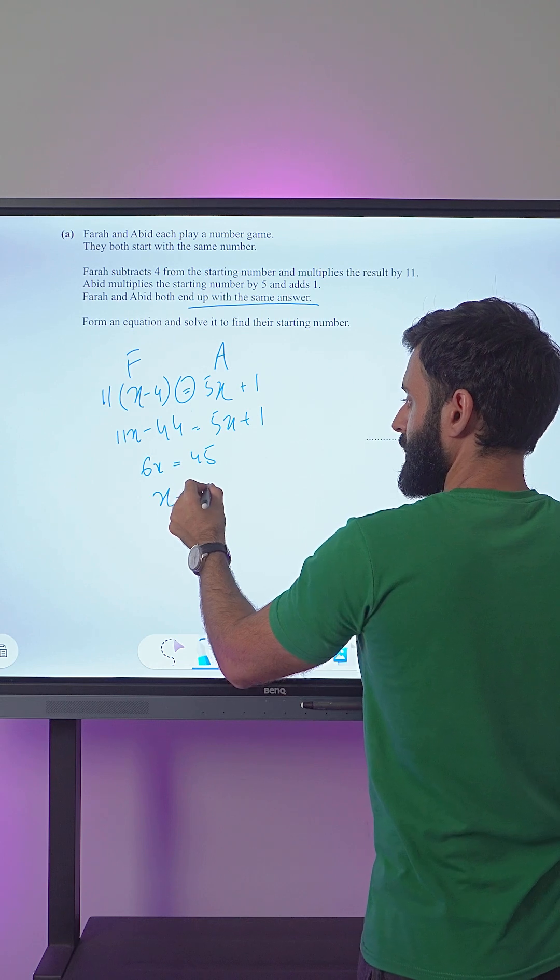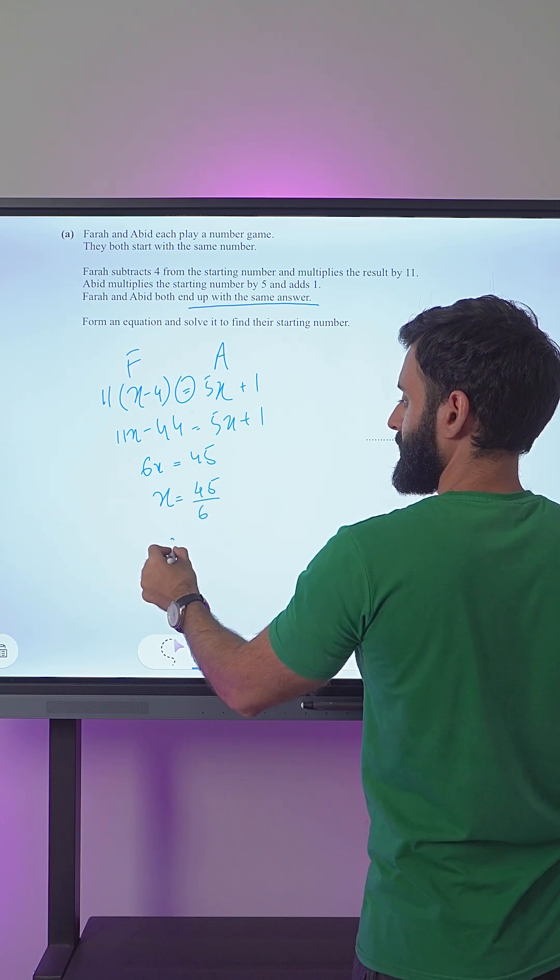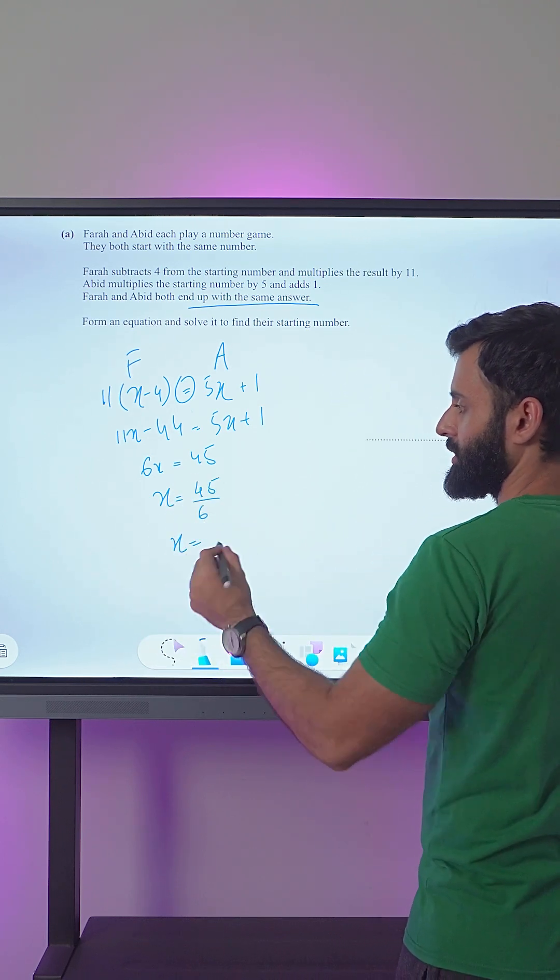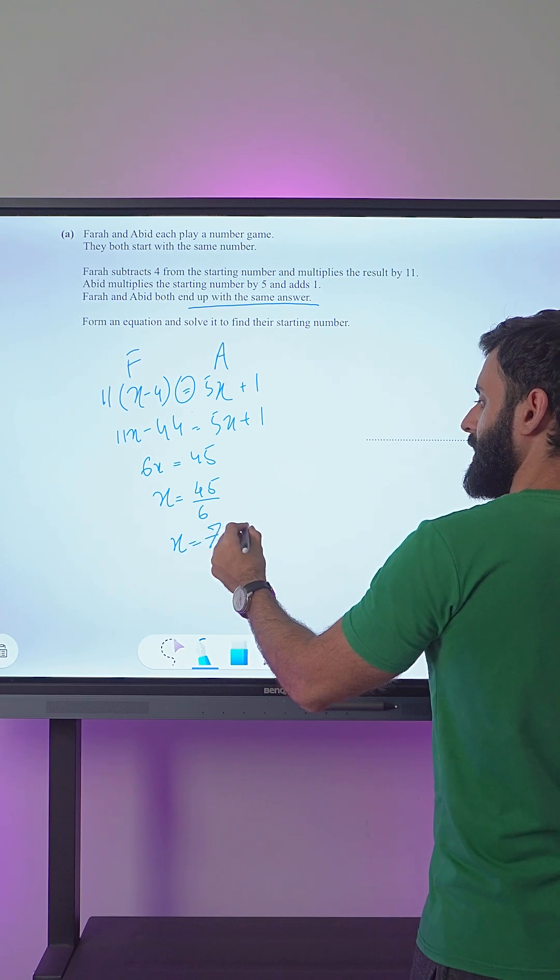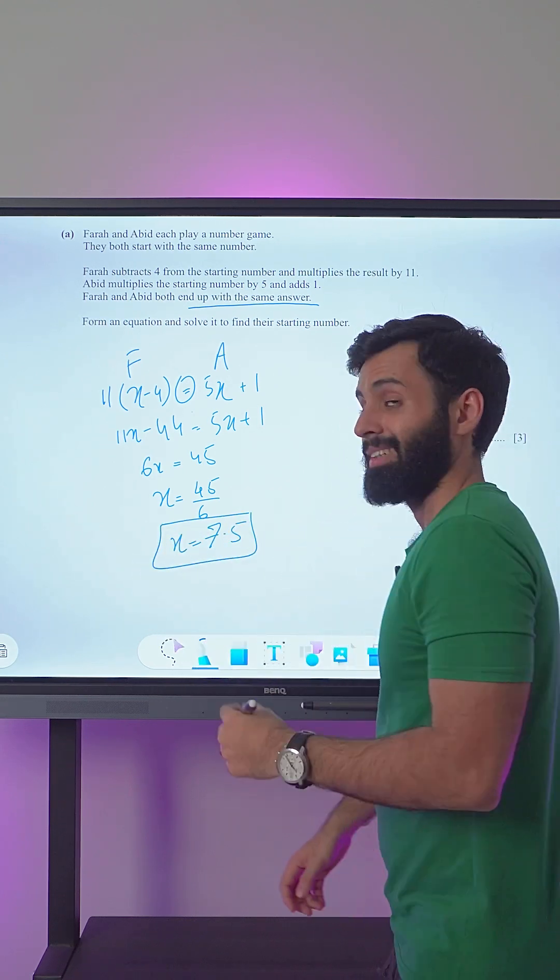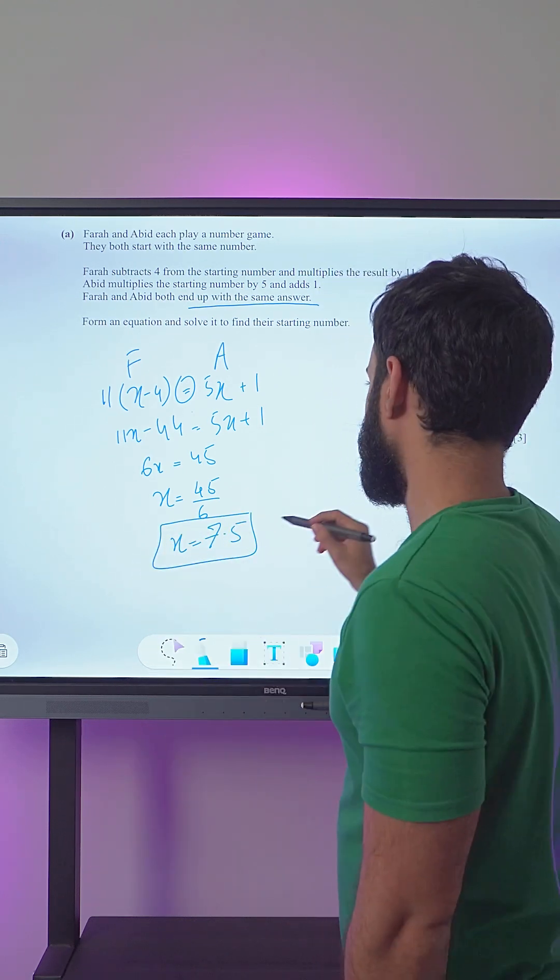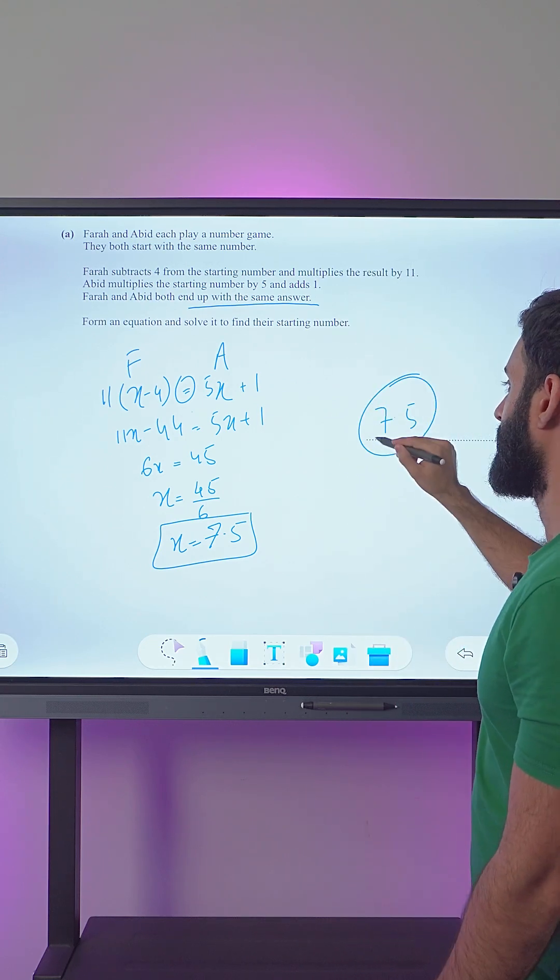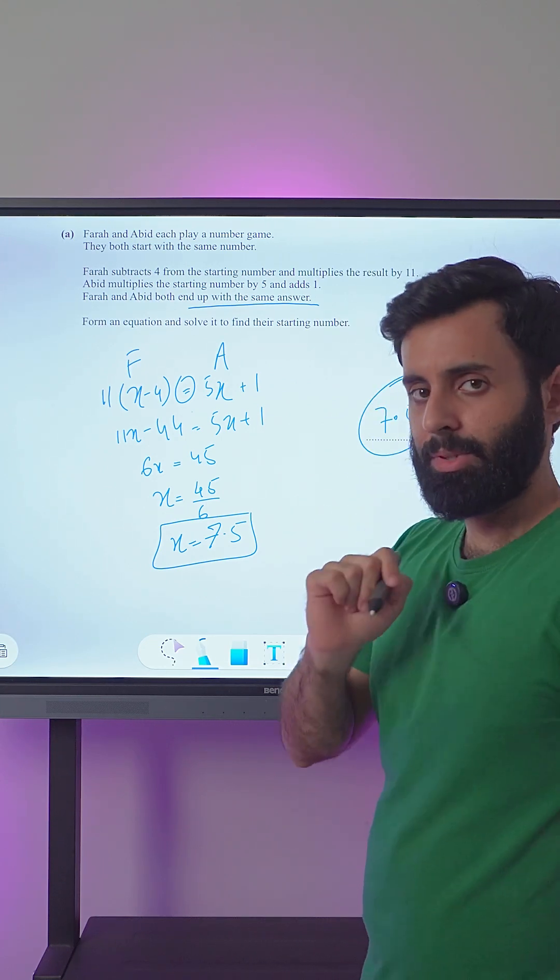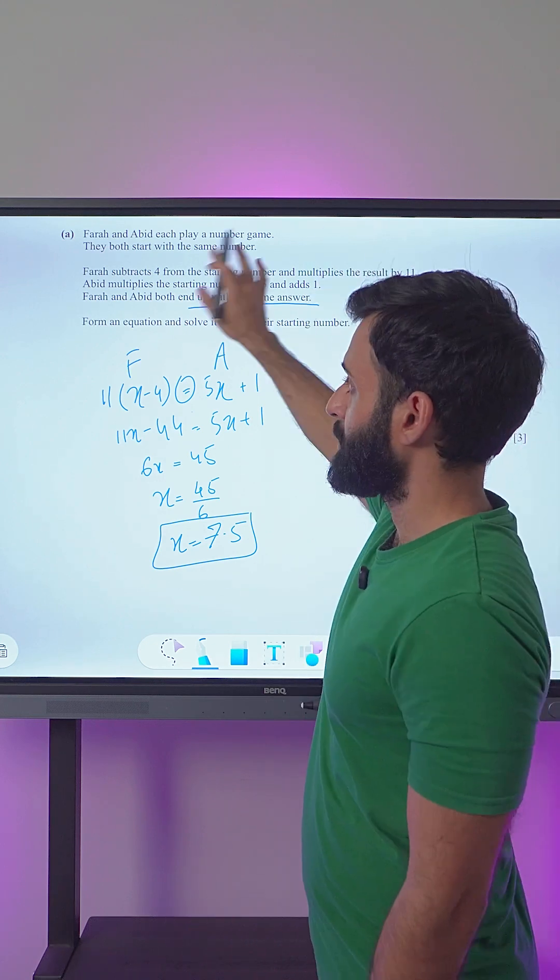Now we can find out the value of x by simply doing 45 divided by 6, which equals 7.5. And the question does not say anywhere that the answer should be an integer or anything of that sort, so that means 7.5 is the correct answer.